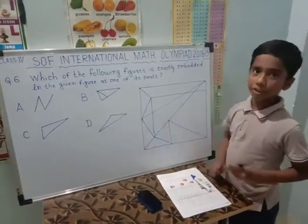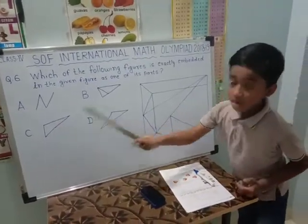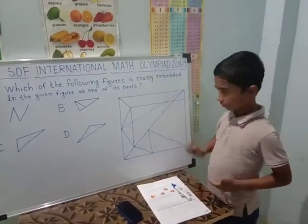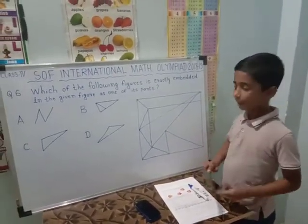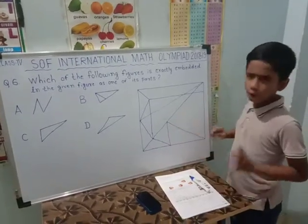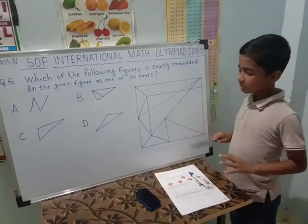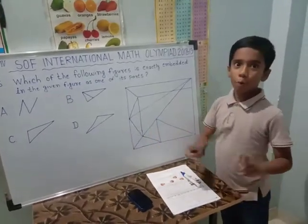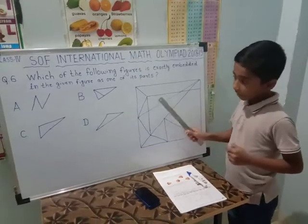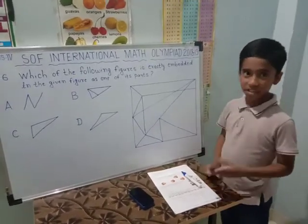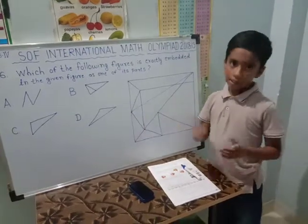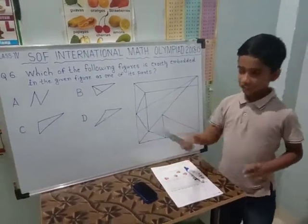Option C is a big triangle — it is not found in any part of the figure. We will see option D. Here it is not there, but here it is there. This means option D is embedded in this figure. So the answer is D. Thank you, please subscribe to our channel.